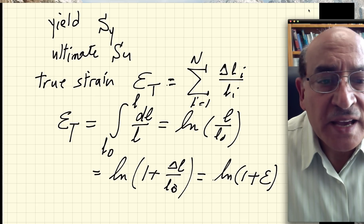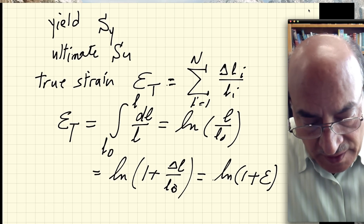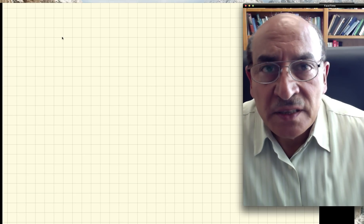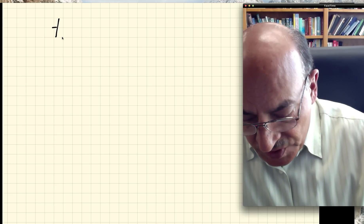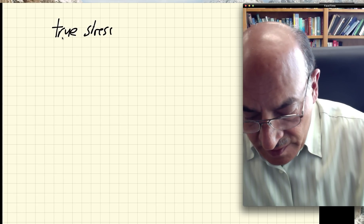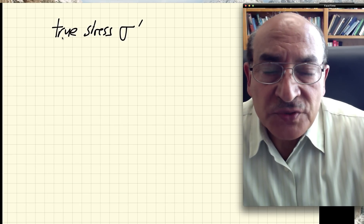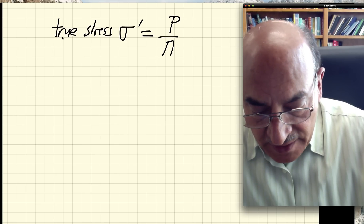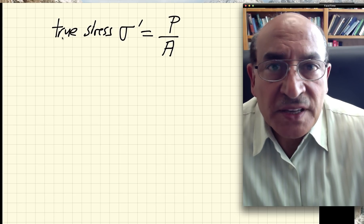This gives a connection between true strain and engineering strain. For true stress, we use the symbol σ' (sigma prime) to differentiate it from the engineering value. True stress σ' is the load divided by the current area A — not the original area A₀.